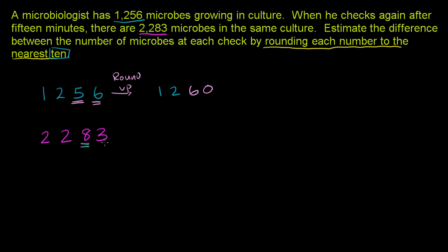If that's 5 or greater, you round up. Otherwise, you round down. This right here, 3, is less than 5. So you want to round down. Instead of 83, we're just going to have 80—2,280.